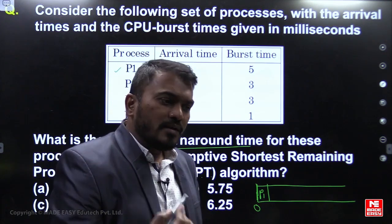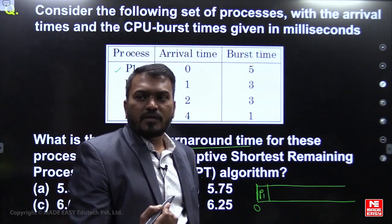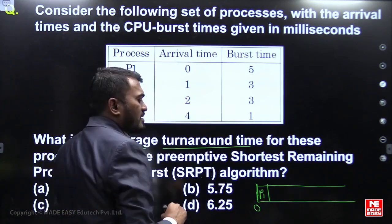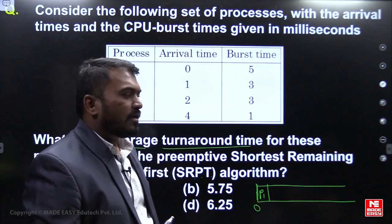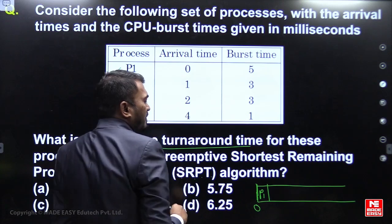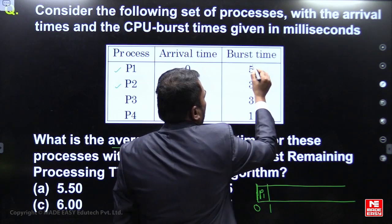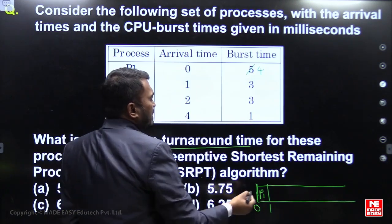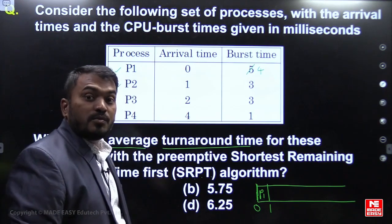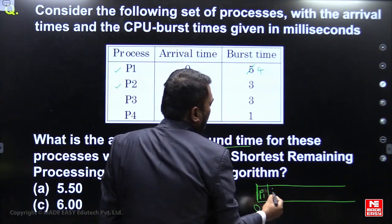For every unit of time, identify who is the shortest job. At time 1, the next process P2 is arriving, so execute P1 for only one unit. P1's remaining time becomes 4. By time 1, P2 is also available. Comparing P1 and P2, P2 has the shorter burst time.